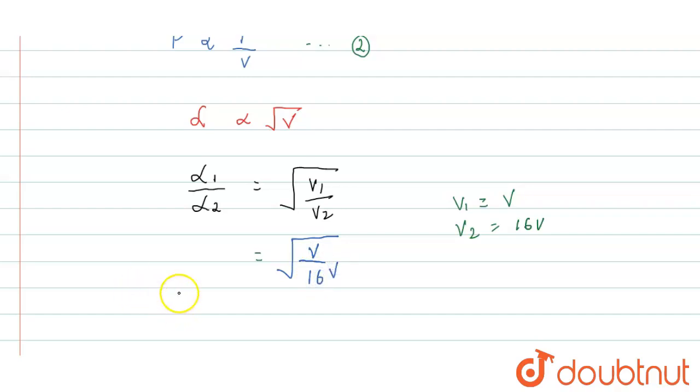Now, this will be solved, you get 1 by 16. Because if we consider volume as initial volume as 1, then it will be 16, square root of this.